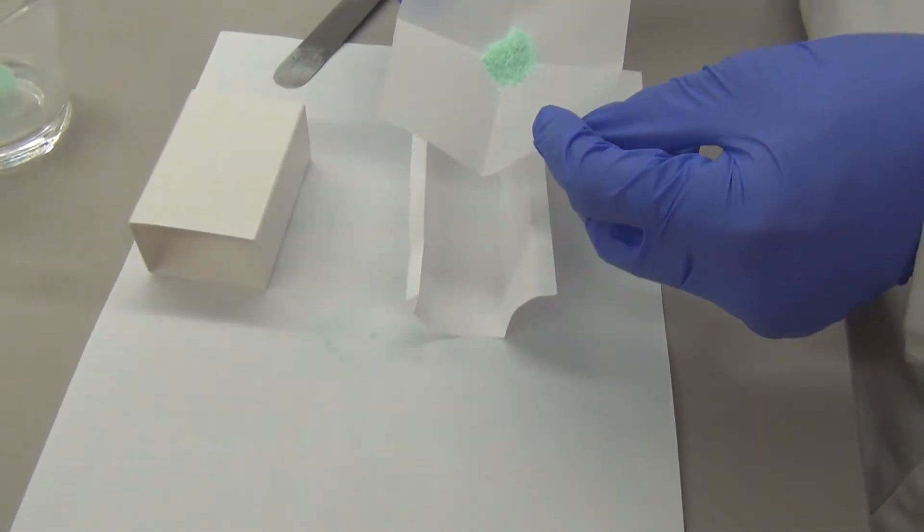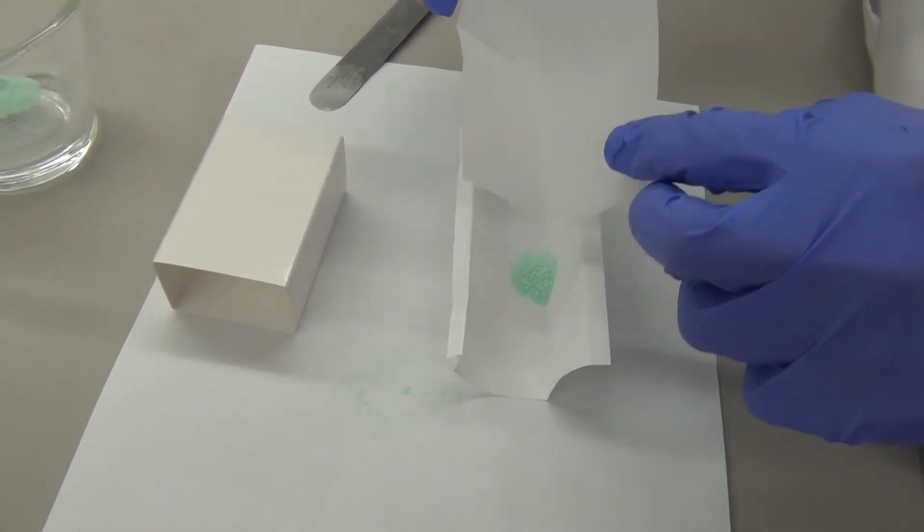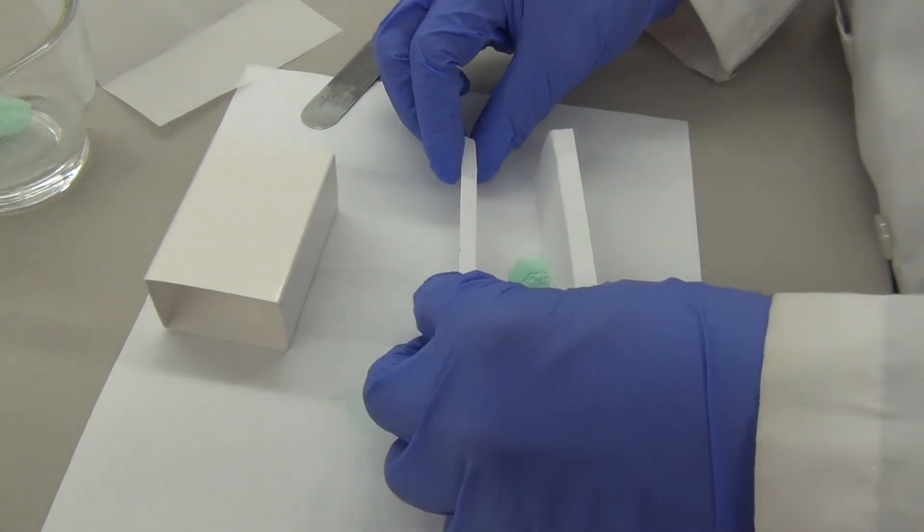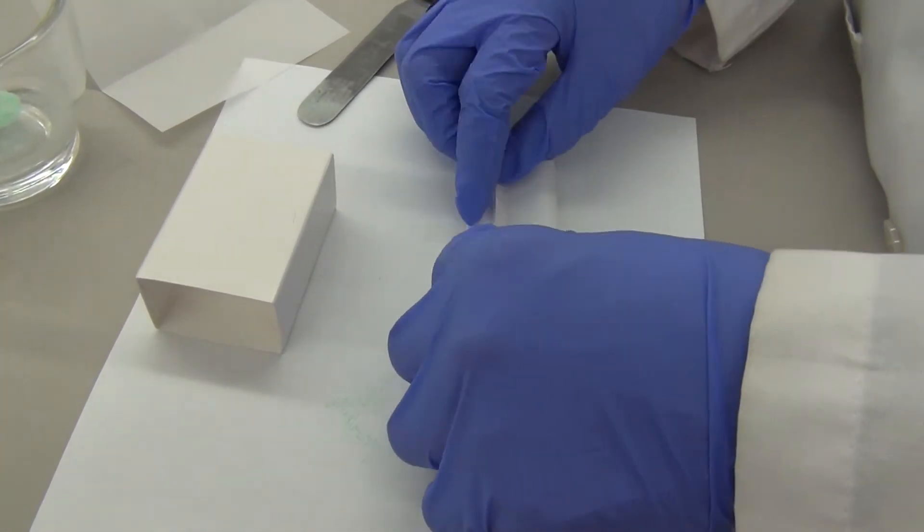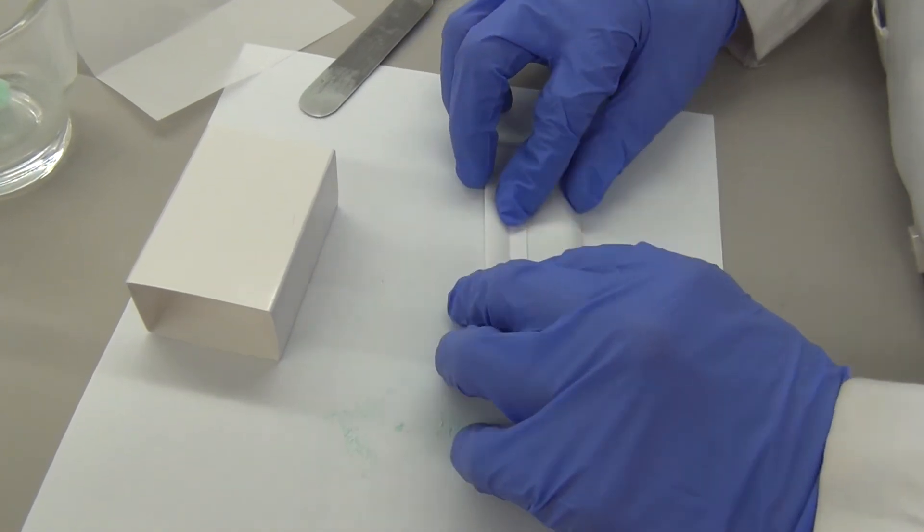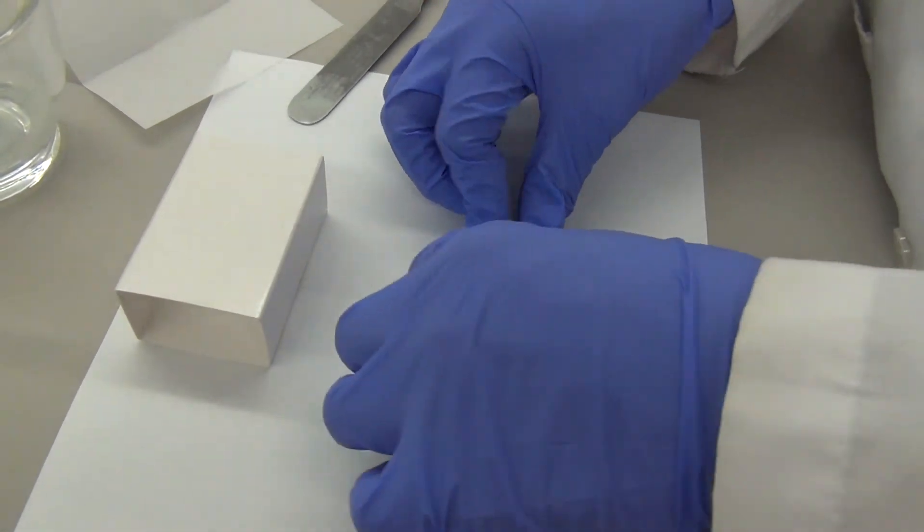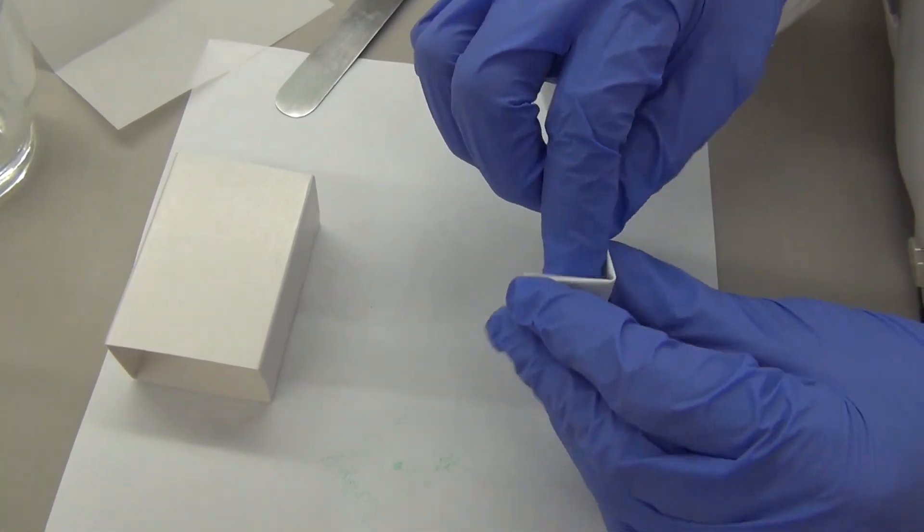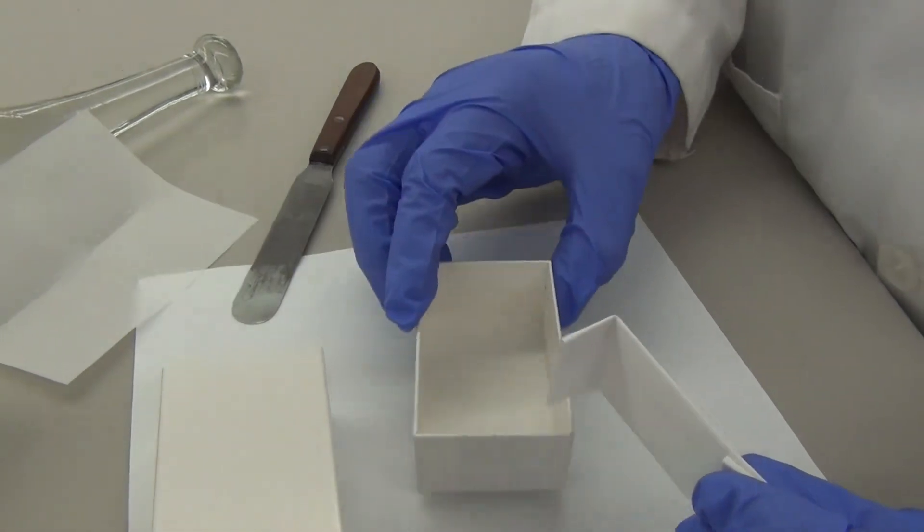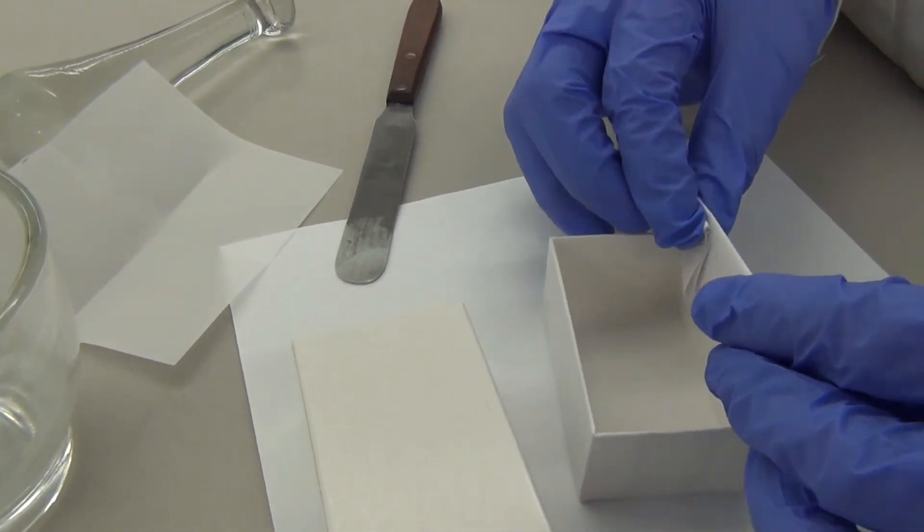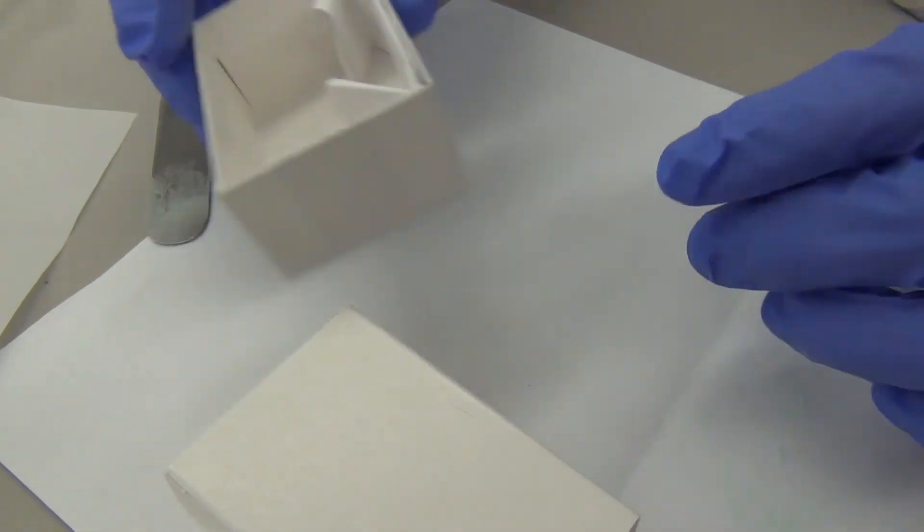Unfold the paper and pour your divided powder in the center. Go ahead and fold the paper again just like you did before. Place your paper in the box and you are done.